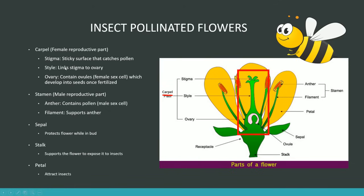The carpel is the female reproductive part of the flower and contains three structures. You've got the stigma, which is a sticky surface that catches pollen. You've got the style, which is the long rod that connects the stigma to the ovary. And you've got the ovary, which contains ovules — the female sex cell. Since you have a female reproductive part, you also need a male reproductive part, which is the stamen. The stamen contains the anther and the filament.